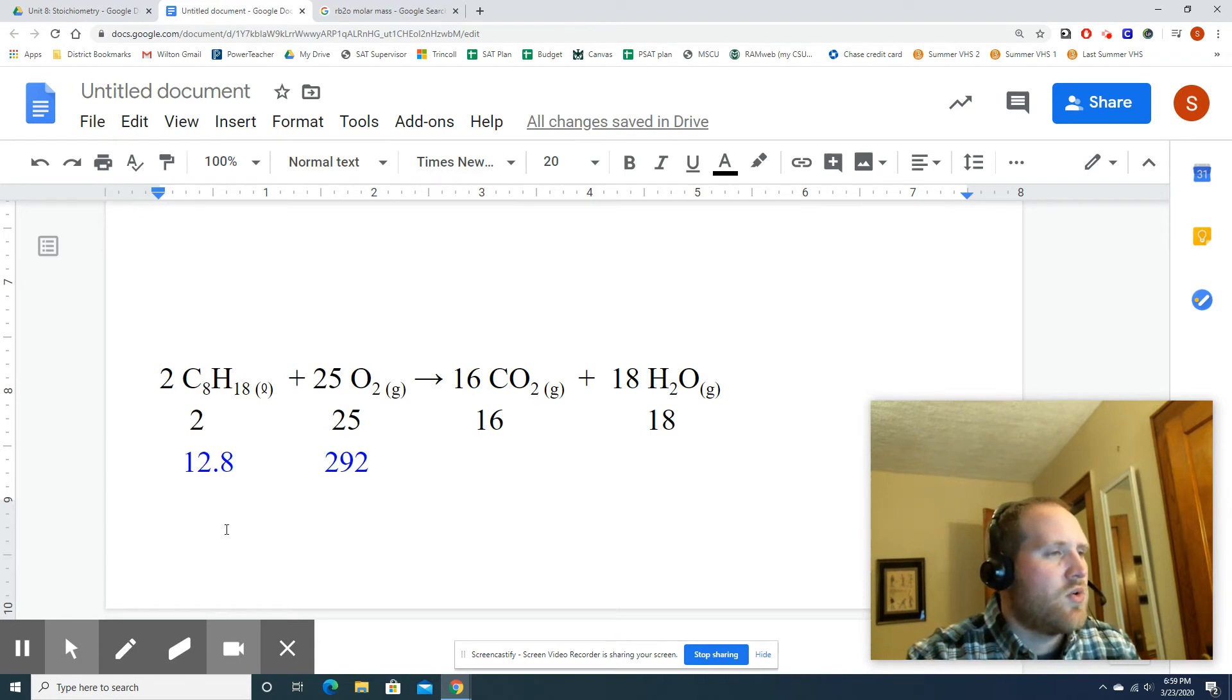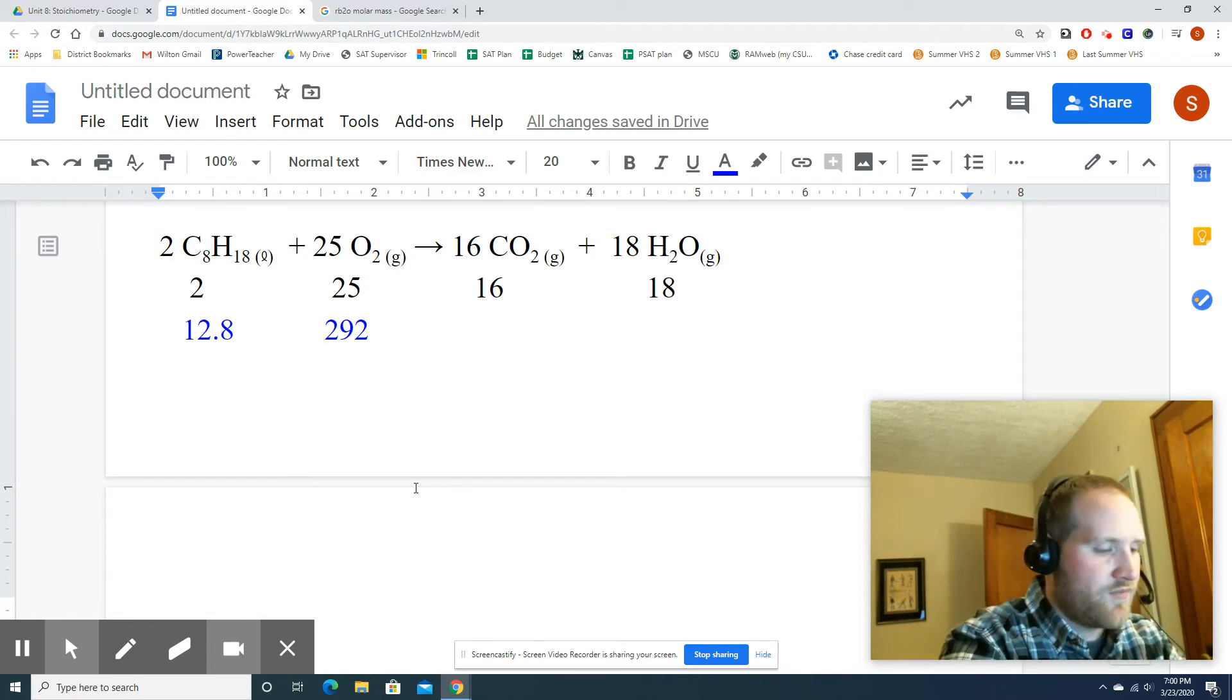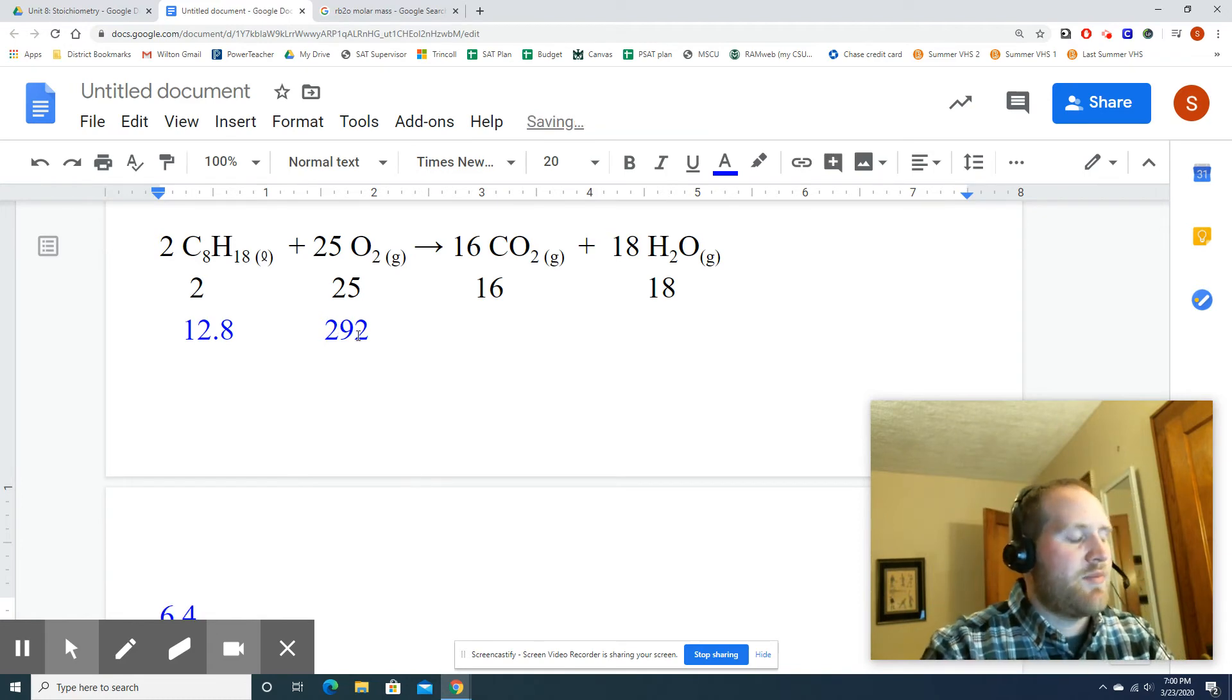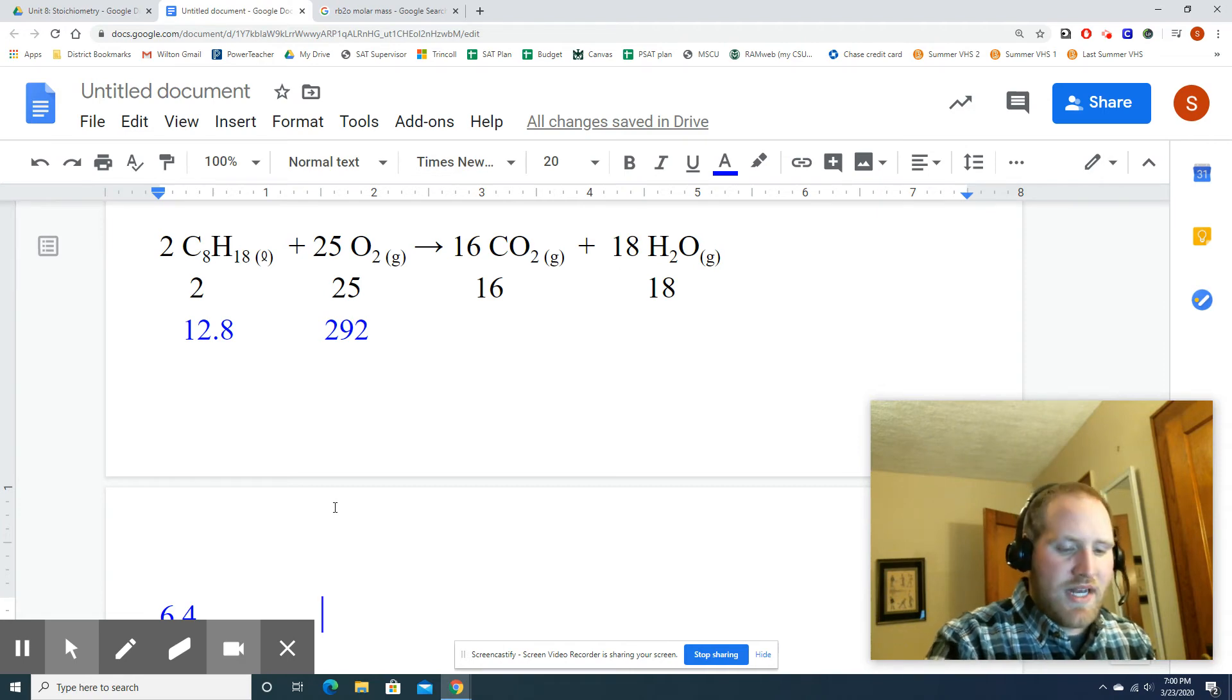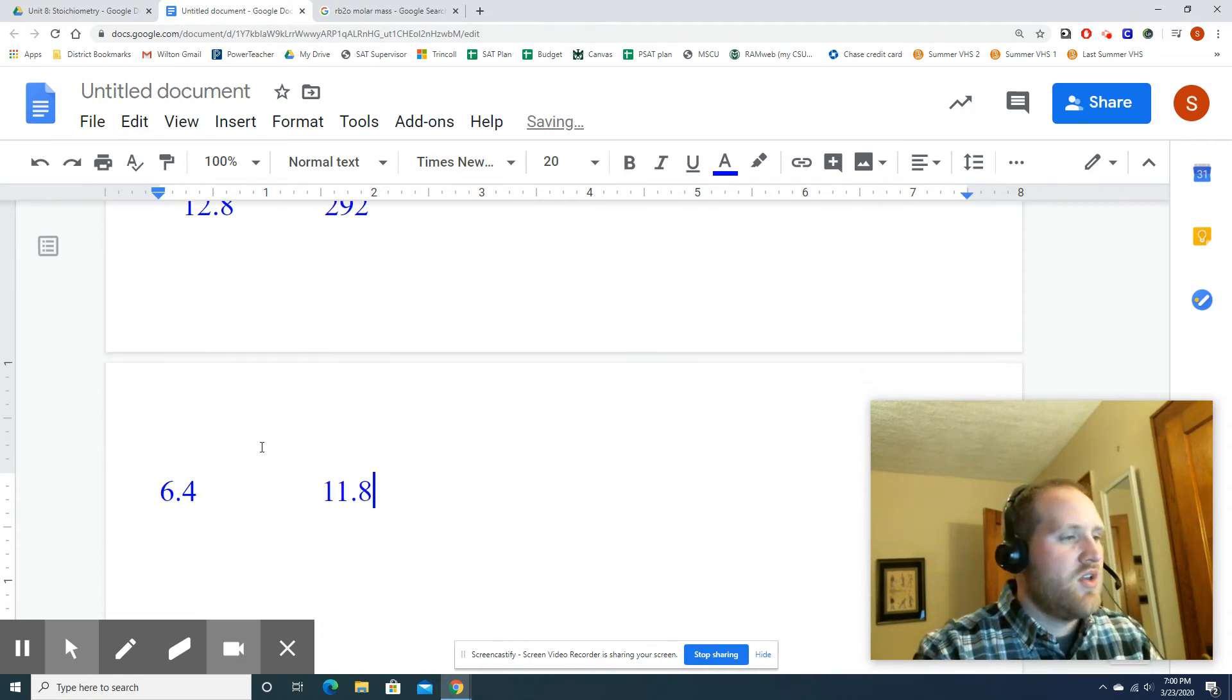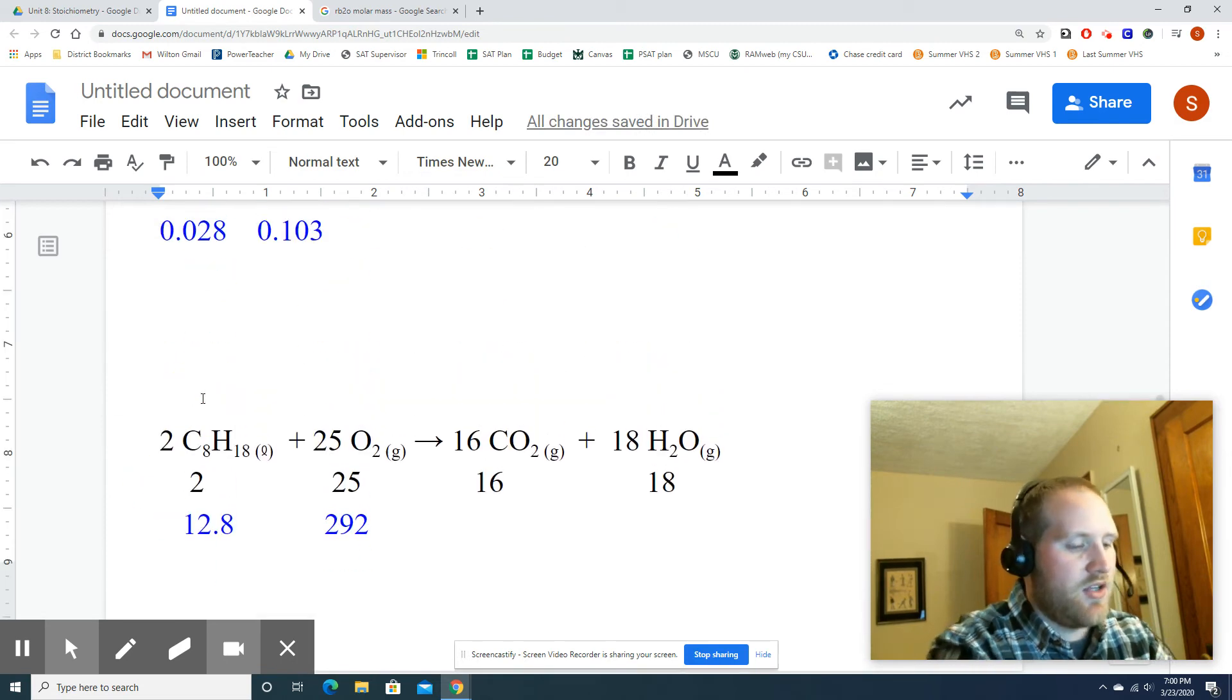All right. So I'm going to take my 12.8 divided by 2, which gives me 6.4. And I'm going to take my 295 and divide it by 25, which gives me 11.8. Which of these numbers is smaller? This one, which makes this my LR, nice and easy. Which makes that my ER.